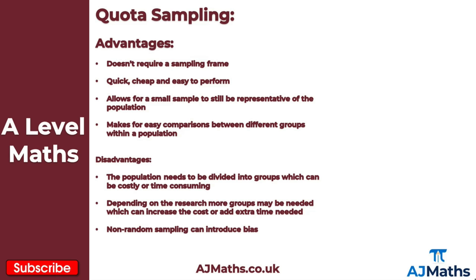Finally, let's look at quota sampling, which has several advantages and disadvantages. Advantages include: it doesn't require a sampling frame, it's quick, cheap and easy to perform, it allows a small sample to still be representative of the population, and it makes for easy comparisons between different groups. Disadvantages include: dividing the population into groups can be costly or time consuming, more groups may need to be added increasing cost and time, and non-random sampling can introduce bias.